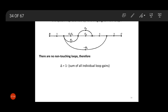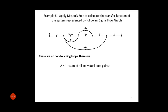Now we check if there are any non-touching loops. In this signal flow graph there are no non-touching loops. Therefore, del equals 1 minus the sum of all individual loop gains — that is, 1 minus (L1 + L2 + L3).